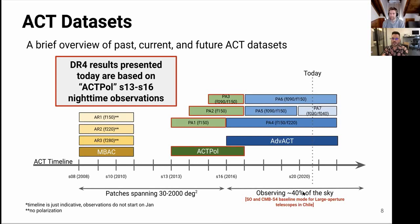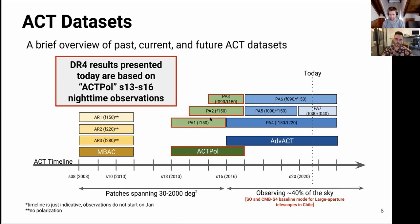Covering large fractions of the sky is the baseline that things like the Simons Observatory or CMB-S4 are assuming for cosmology from Chile. You want a big telescope that covers a large area of sky to do things like neutrino mass. Trying this out is non-trivial and we really wanted to do it with ACT. With these datasets, we can constrain cosmology fairly well, and we're still observing today and will continue for a few more years.